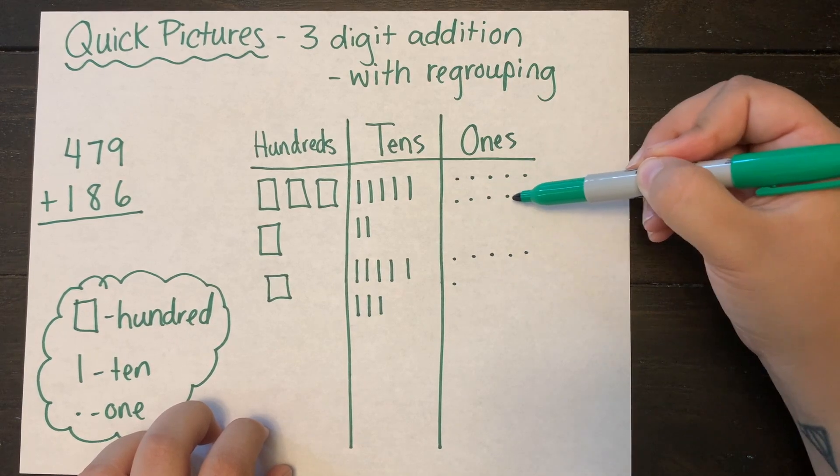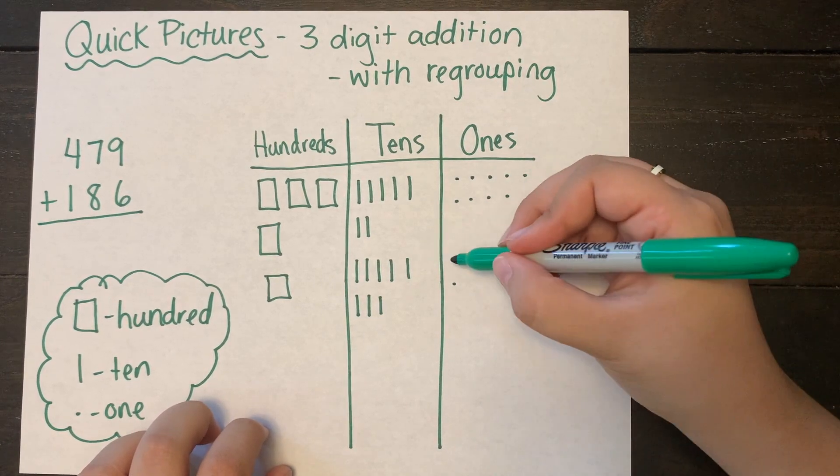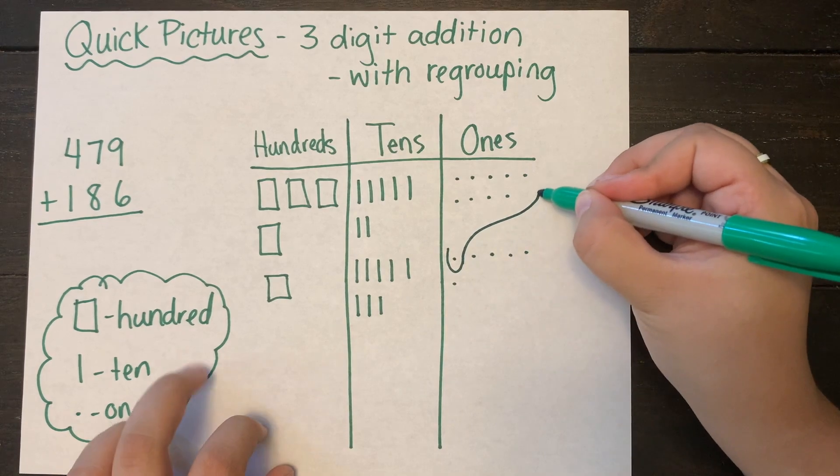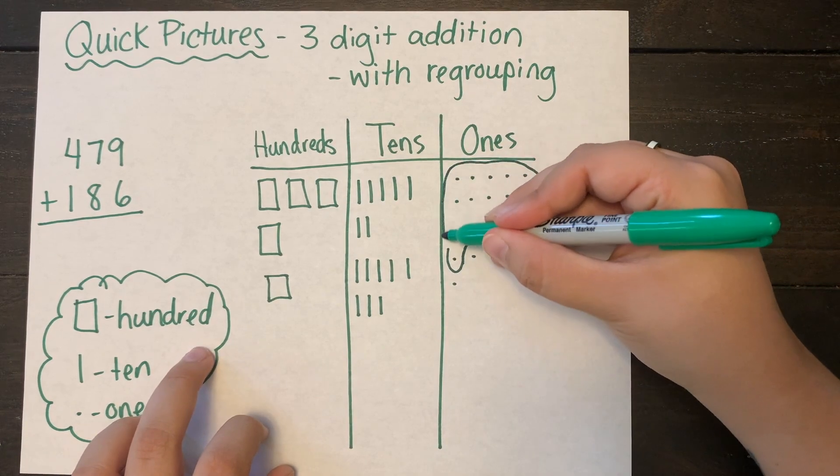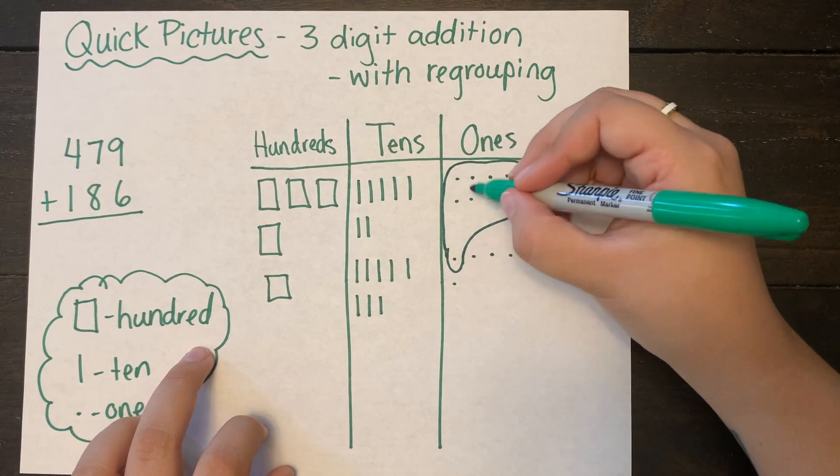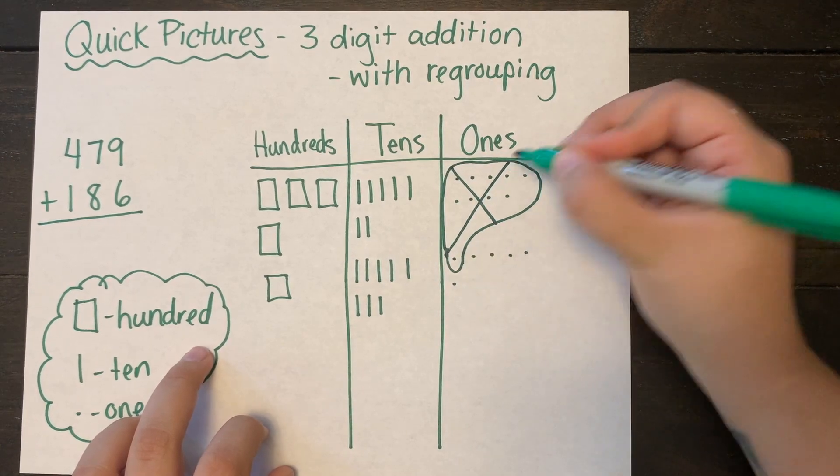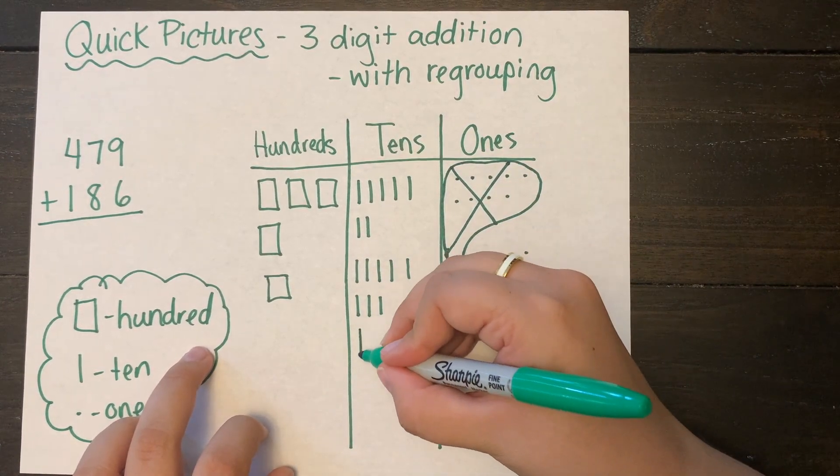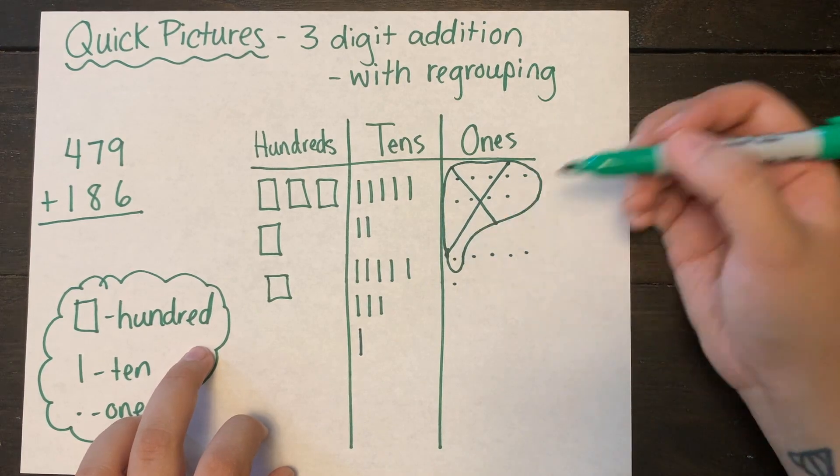So I see that I have more than ten dots in my ones column. So I'm going to take those ten dots, I'm going to circle them, and I'm going to regroup them as one ten over in the tens column. And I'm making sure I'm crossing out those dots so I don't accidentally count them again.